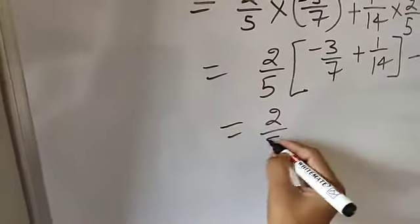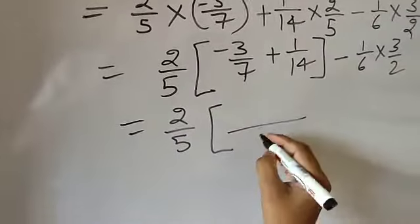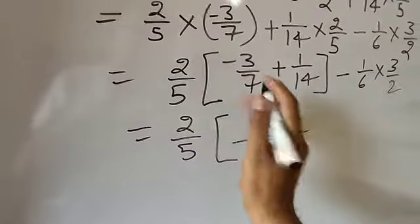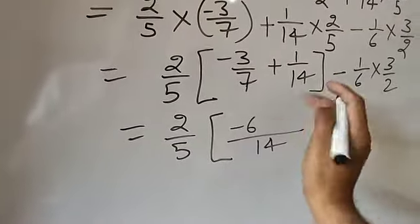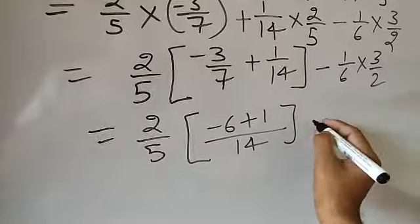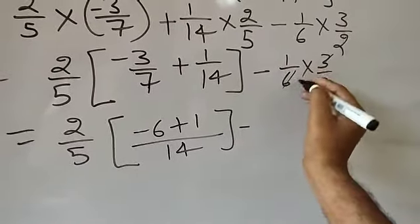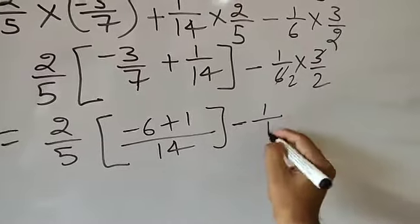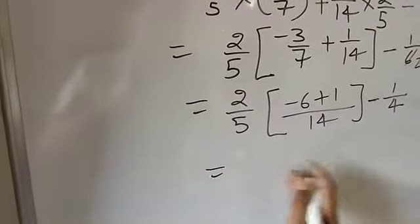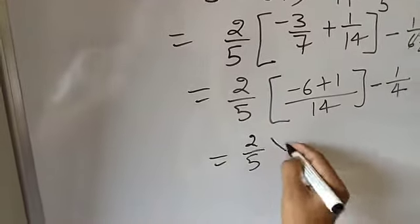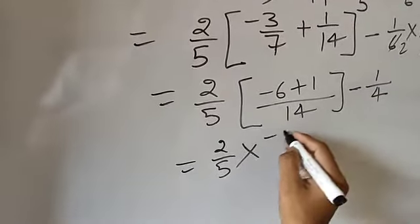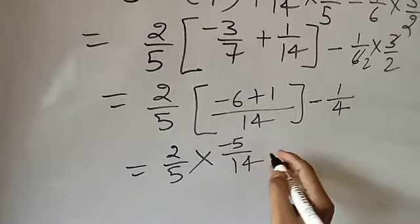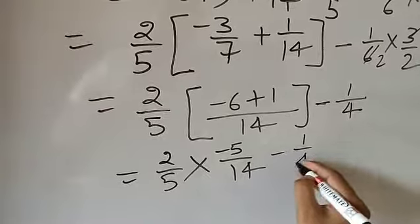It can be written as 2 by 5, and now for 7 and 14, the LCM will be 14. So here you need to take the LCM, that is 14. 7 times 2 is 14. 2 times 3 is 6, minus 6, and it will be plus 1. Here you can simplify — 3 times 2 is 6, that is the multiplication. Minus 1 by 2 — 2 times 2 is 4 — that will be minus 1 by 4. So here it is 2 by 5 into minus 6 plus 1, that will be minus 5 by 14. Minus 6 plus 1 equals minus 5, upon 14. That gives us minus 1 by 4.